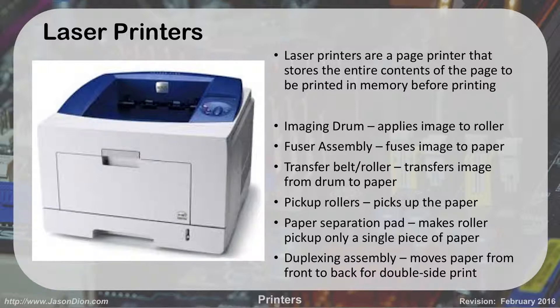When you use something like an inkjet, which is what you're probably used to at home, it does it line by line — that's called a line printer. With laser printers, it has to send the entire page, stores it in memory at the printer, and then it prints out the page.